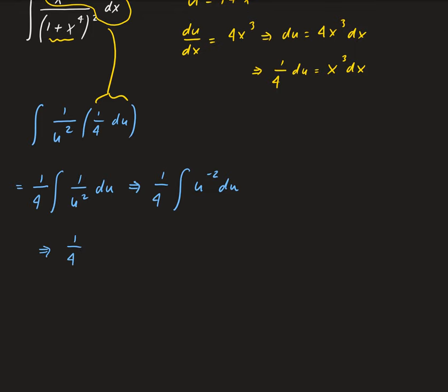So using the power rule for integration, we have u to the negative 1. So we add 1 to negative 2, and then divide by minus 1. And that's going to give us minus, that's the same thing as writing minus 1 over 4 times u.